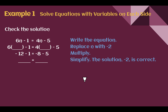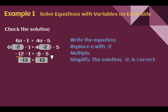We should check our answer by plugging in negative 2 for n. 6 times negative 2 gives us negative 12, and minus 1 more is negative 13. 4 times negative 2 is negative 8, and subtracting 5 more is also negative 13. We end up with a true statement — negative 2 was the correct solution.